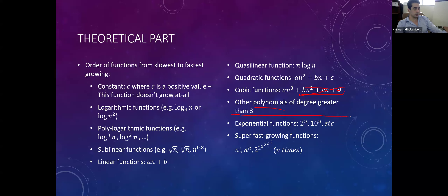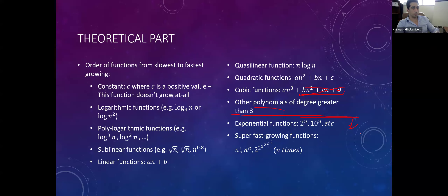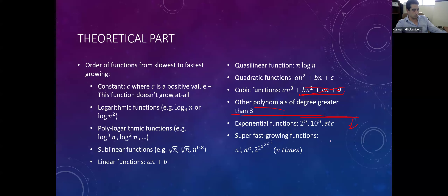If your algorithm has exponential or faster complexity, it's not a feasible solution, because no matter how powerful a computer you use, it takes forever for large values of n. Unless you use a different computational model — with the regular Turing machine model we use every day — you cannot run exponential algorithms. Examples of exponential functions: 2 to the n, 10 to the n, etc.